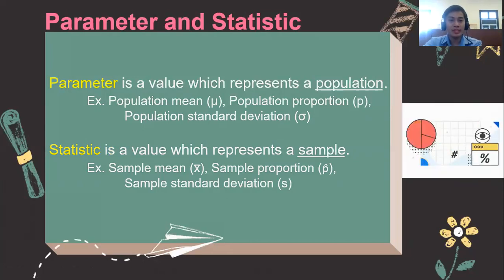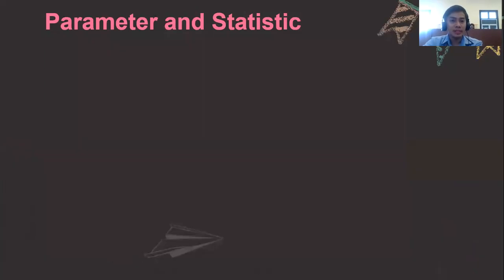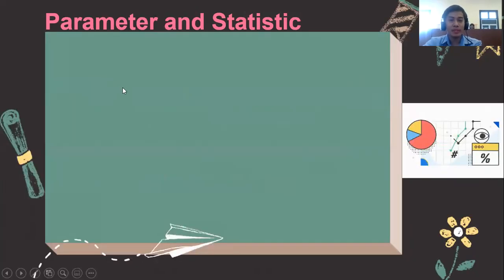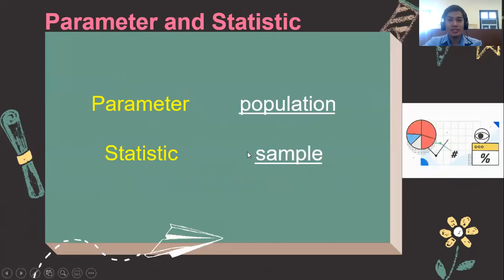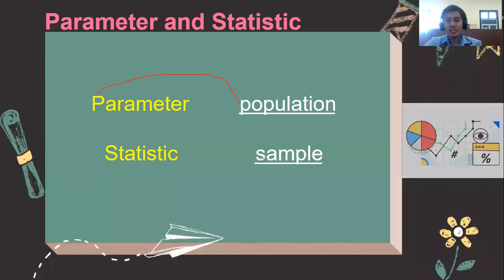Notice that a parameter is to a population, and a statistic is to a sample. To better remember that: p is to p, s is to s.